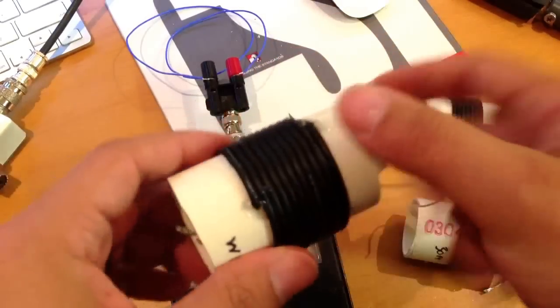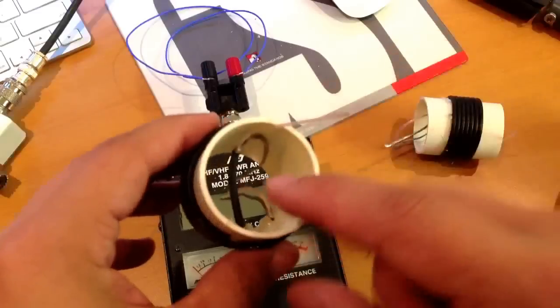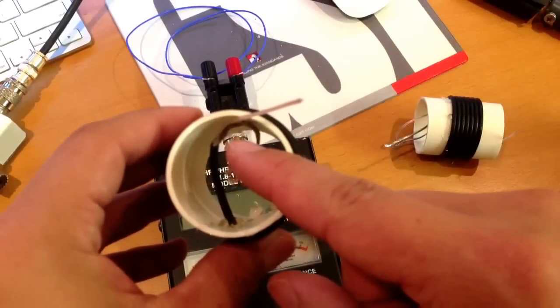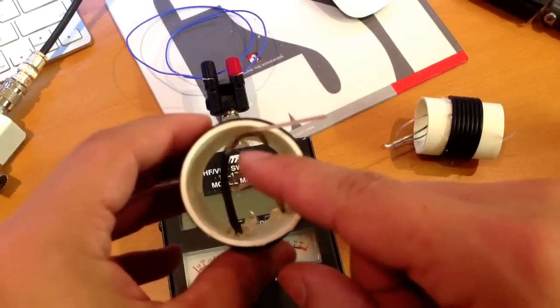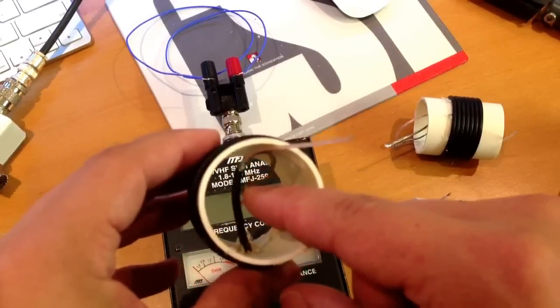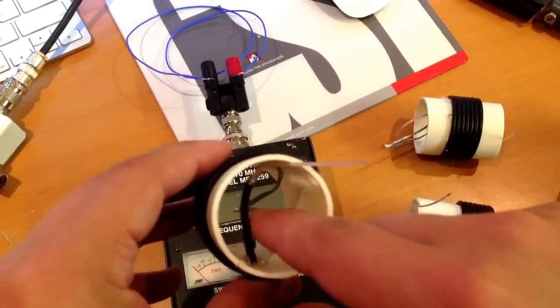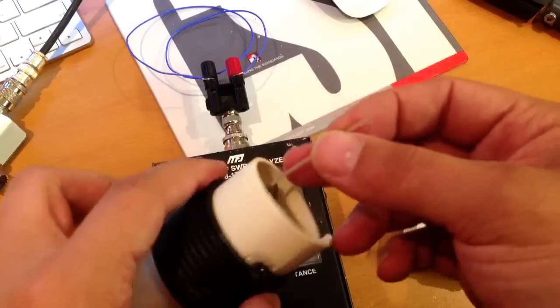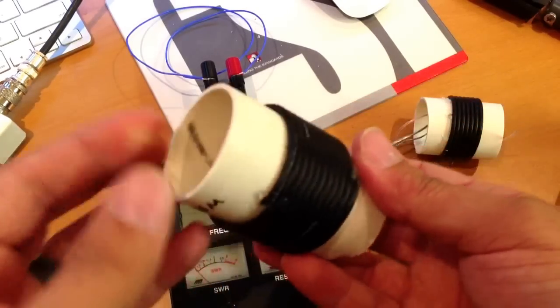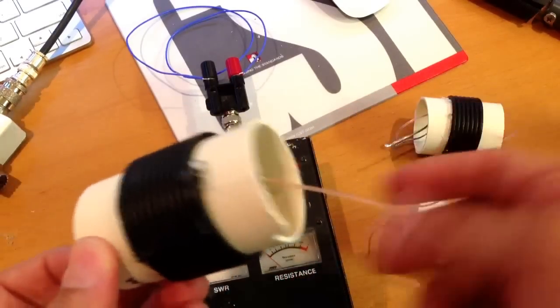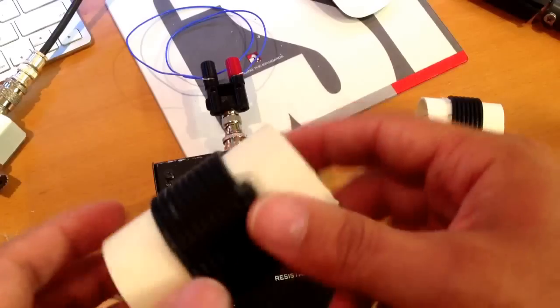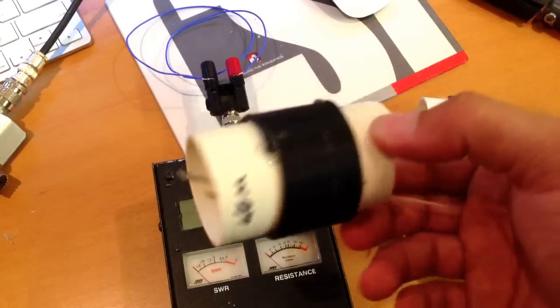So basically, you wind it the number of turns, and then connect the braid to the center conductor on one side. Then on one side you have the center conductor and on the other side you have a braid coming out that's not connected to anything. That makes it parallel to the circuit. So that's a trap.